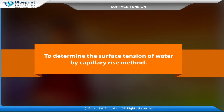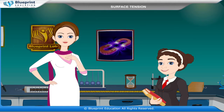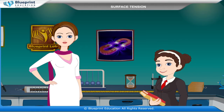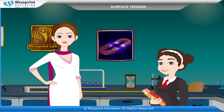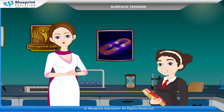To determine the surface tension of water by capillary rise method. Surface tension is the elastic tendency of liquids which makes them acquire the least surface area possible. Surface tension is an important property that markedly influences many ecosystems.